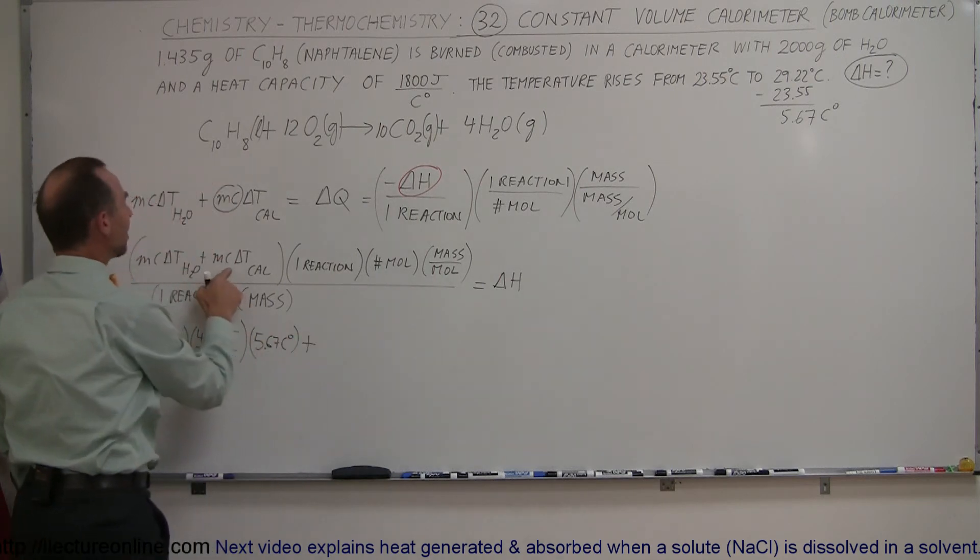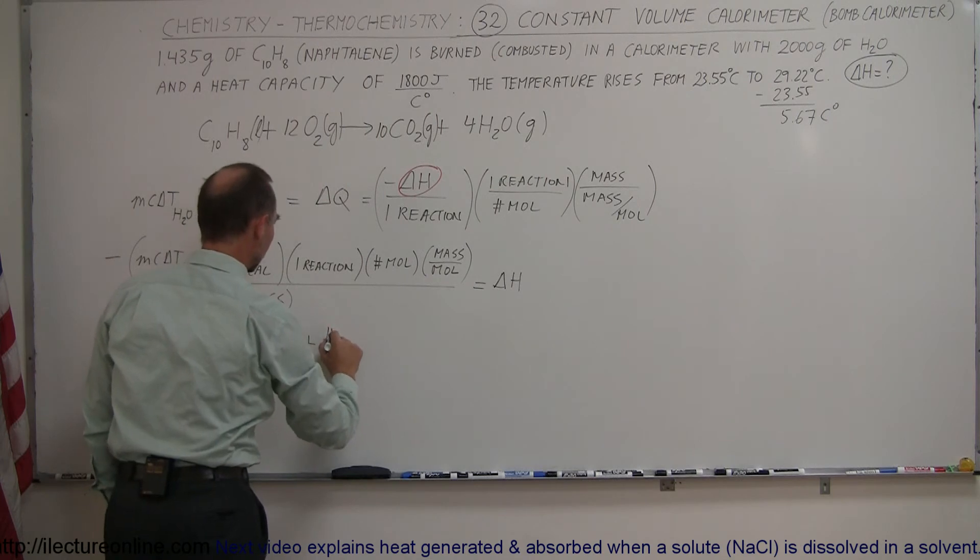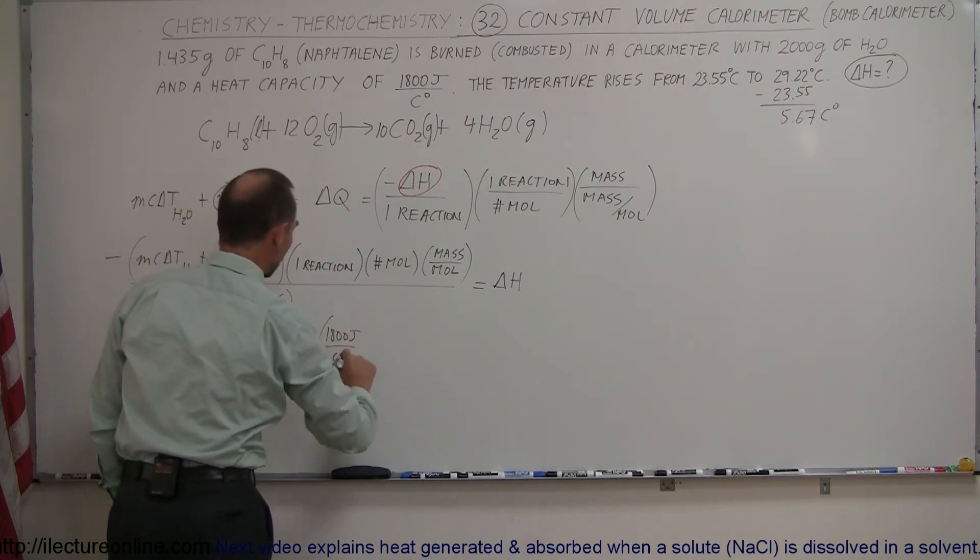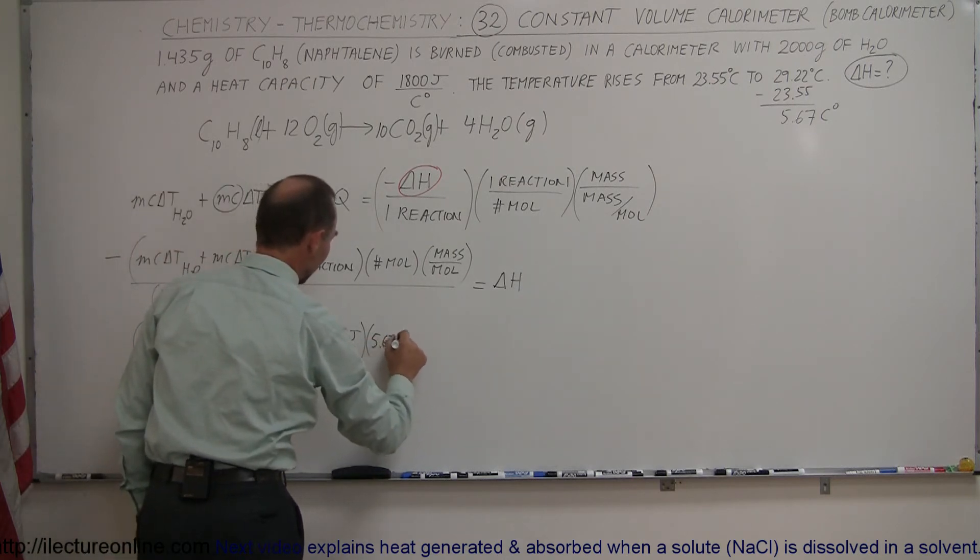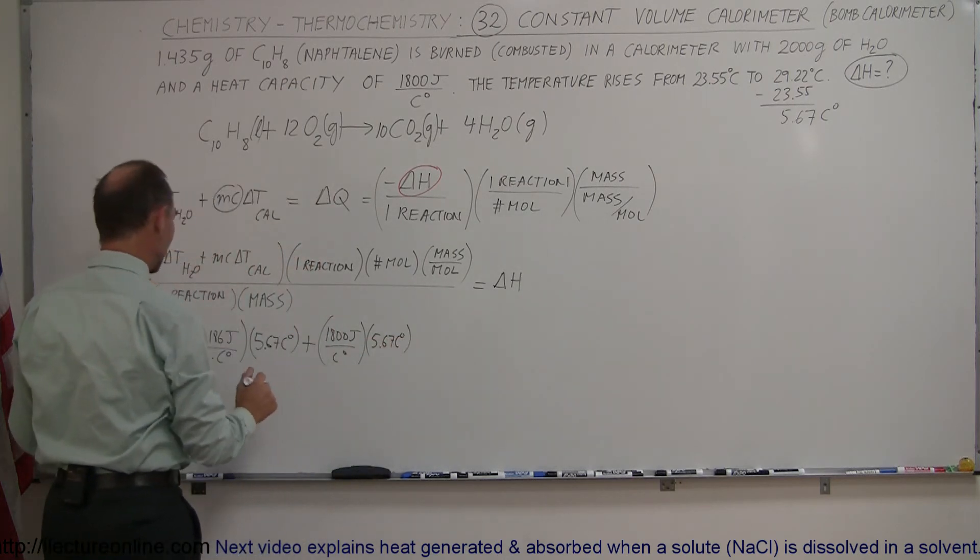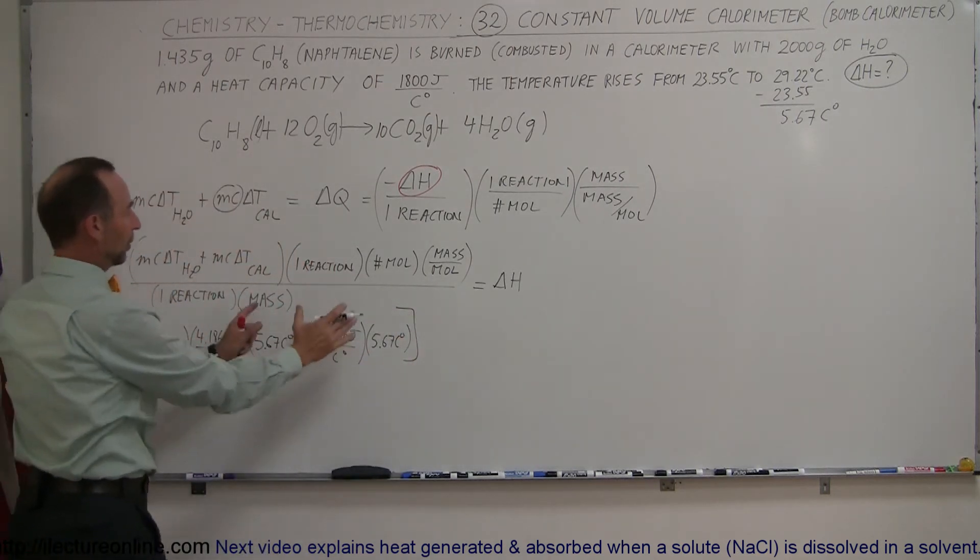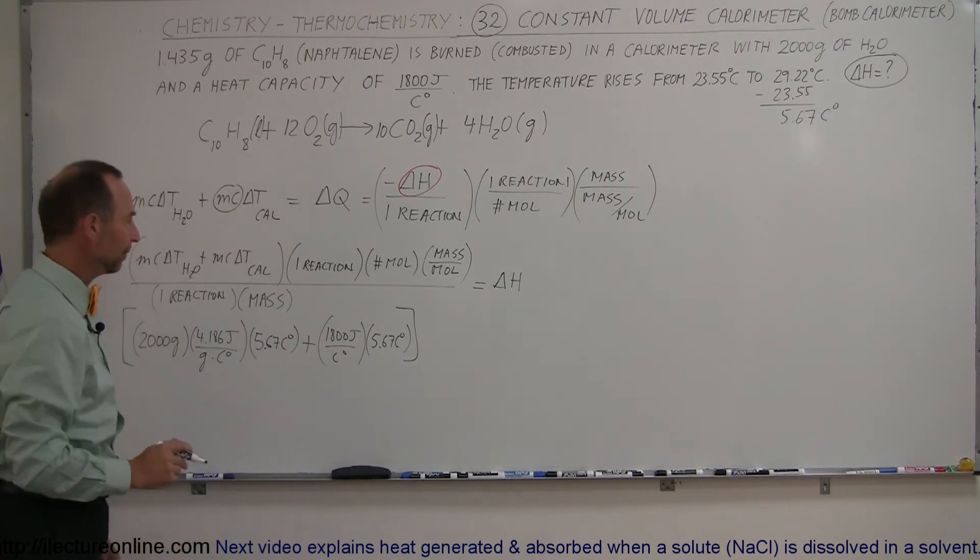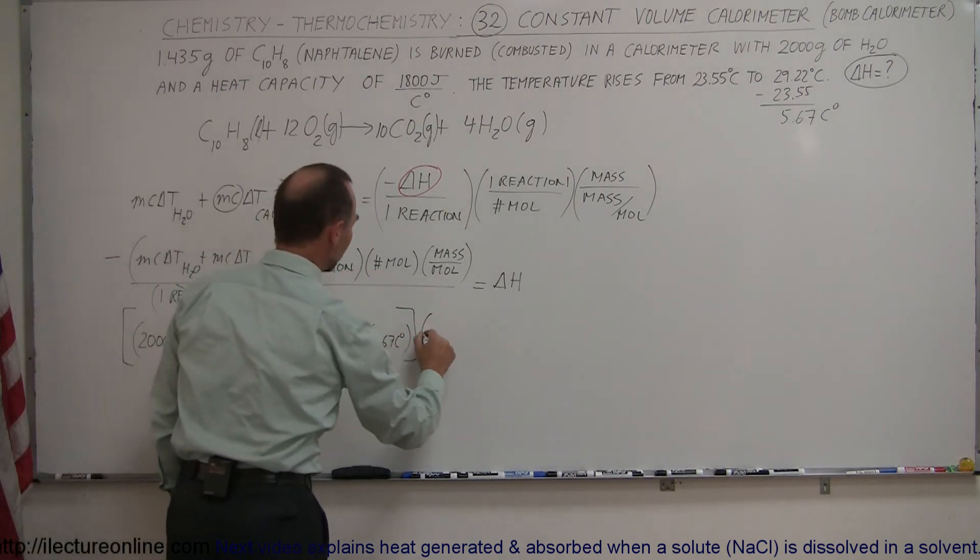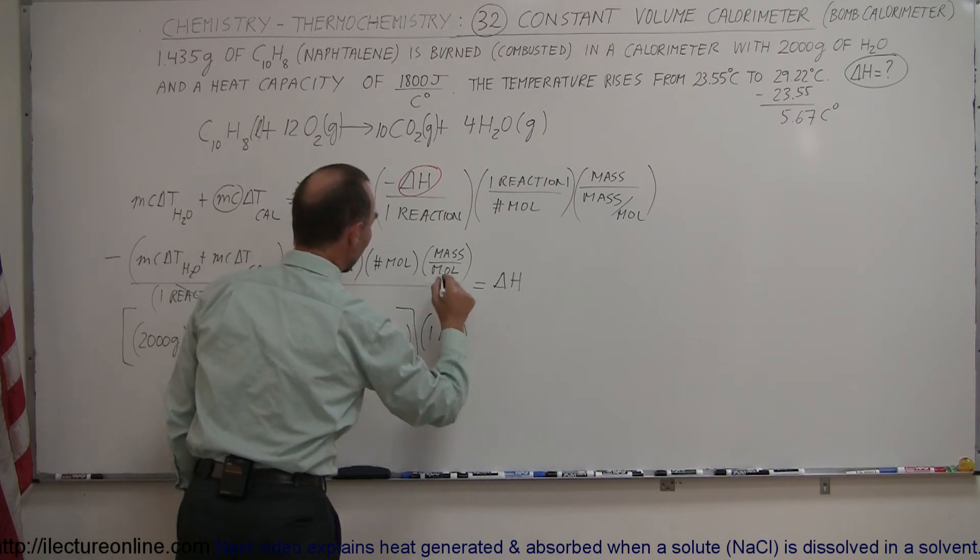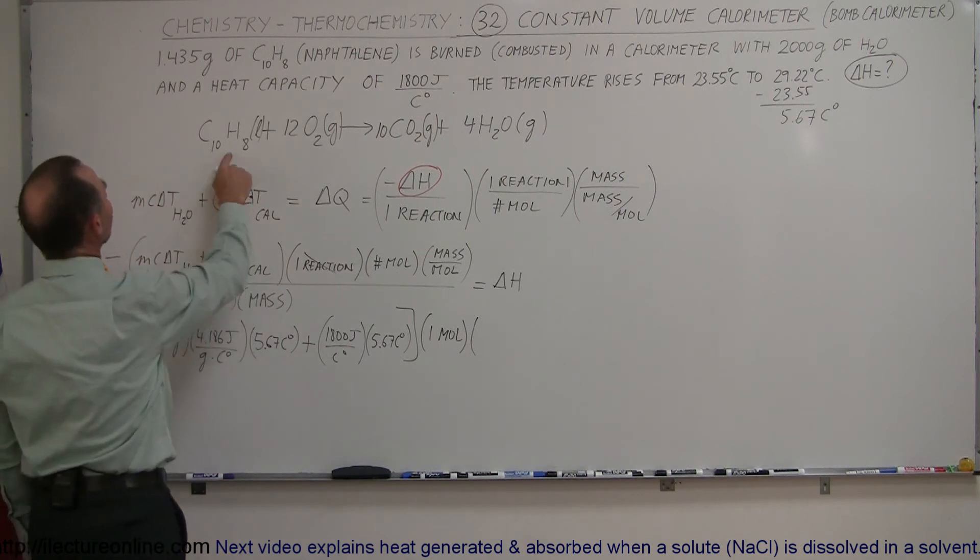Plus MC of the calorimeter, which was 1,800 joules per centigrade degree, and then we multiply that times the change in temperature, which is again 5.67 centigrade degrees. So now we have the heat absorbed by the water plus the heat absorbed by the calorimeter. Reaction cancels out. The number of moles, we know that it's 1 mole, and the mass per mole. What is the mass per mole of naphthalene?